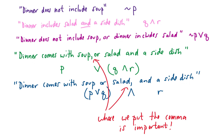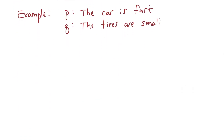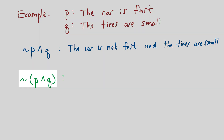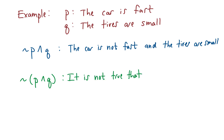Let's look at another example where p represents 'the car is fast' and q represents 'the tires are small'. For a statement like ~p ∧ q, 'not p' means 'the car is not fast', giving us 'the car is not fast and the tires are small'. A statement like ~(p ∧ q) is different — the negation negates the entire expression, so we say 'it is not true that the car is fast and the tires are small'.